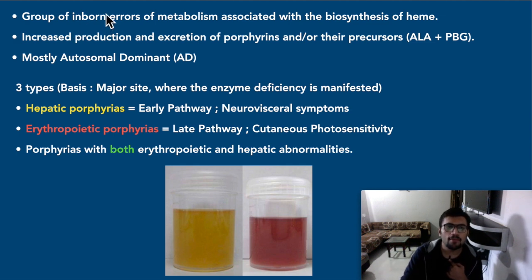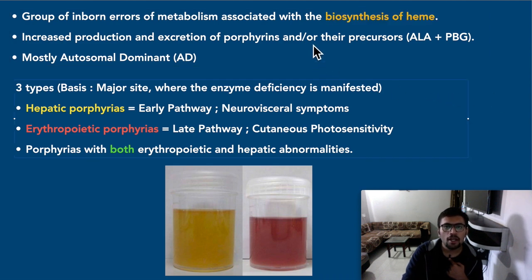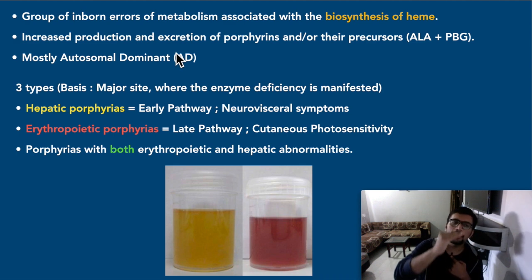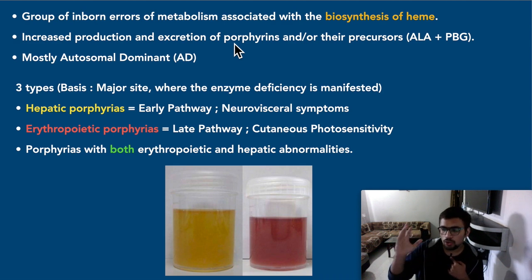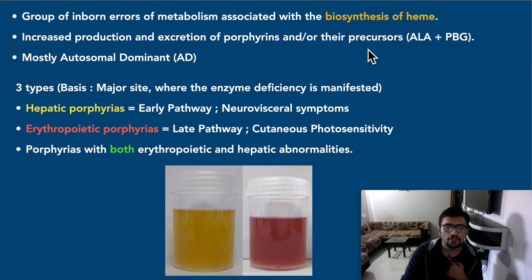Porphyrias are a collective group of inborn errors of metabolism. There are some errors in metabolism reflecting in the form of a disease, all due to a defect in the heme biosynthesis pathway. There is some enzyme deficiency; when an enzyme is deficient, a particular product will not be synthesized, so the precursor will increase in amount. The disorder leads to increased production and excretion of porphyrins — you are not getting heme, you are getting porphyrins, which are basically unwanted products. Their precursors — ALA and PBG — also increase.